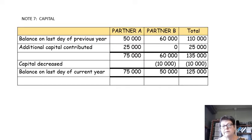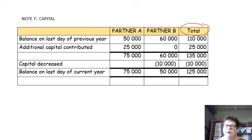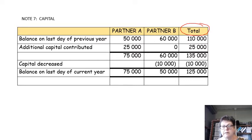Note 7 has to do with the capital contributions of the partners. You need a column for each of the partners and obviously a column for the total. You always start with the balance on the last day of the previous year, or the balance at the beginning of this year, because the end of last year and the beginning of this year is exactly the same amount. These balances will normally be supplied.